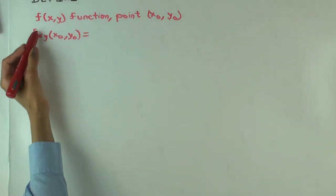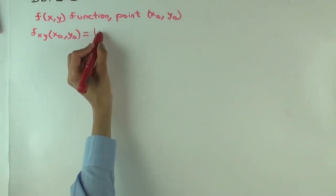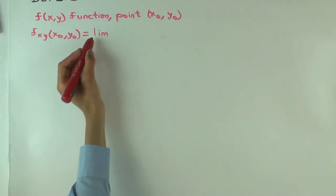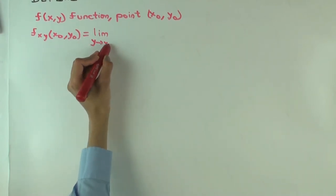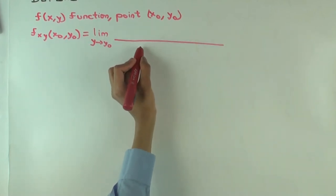This is f sub x sub y. So you're differentiating what function? F sub x with respect to y. If you think about that as a difference quotient, what's that? So y minus y0 is in the denominator. What's in the numerator?